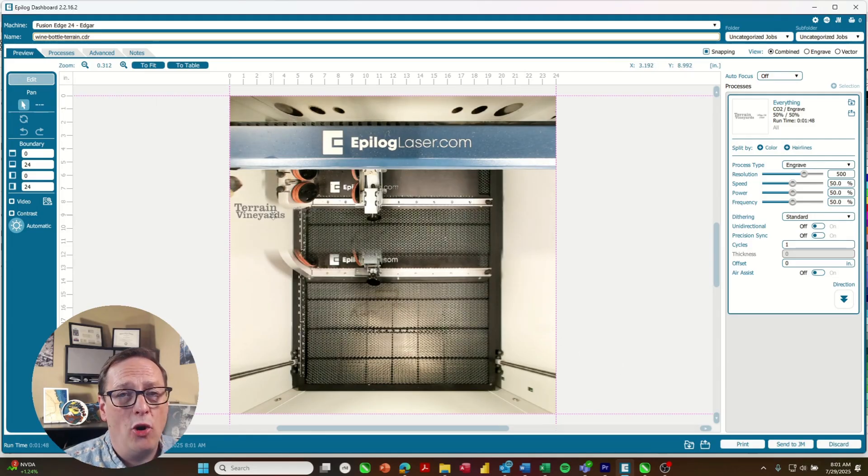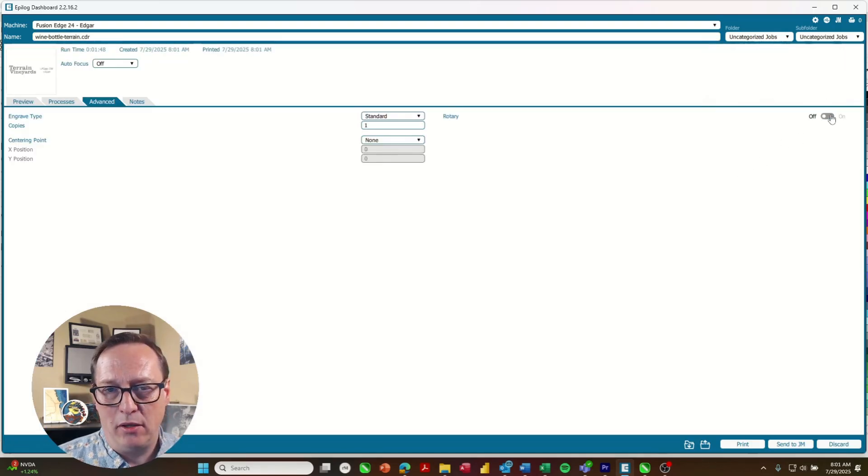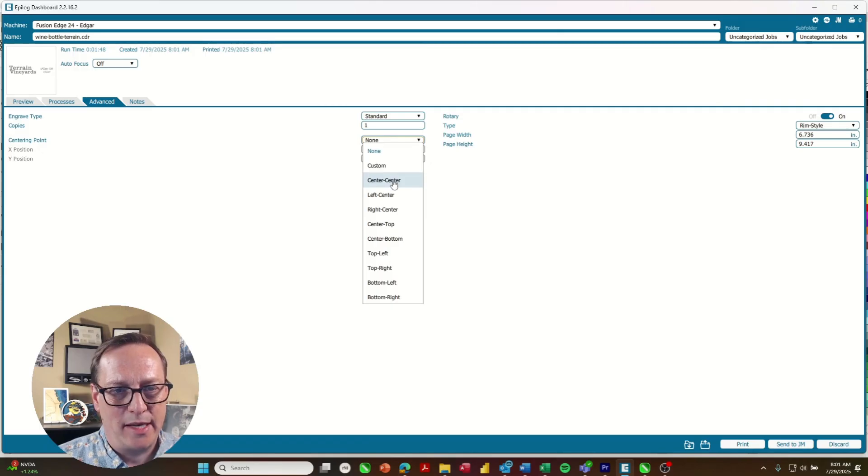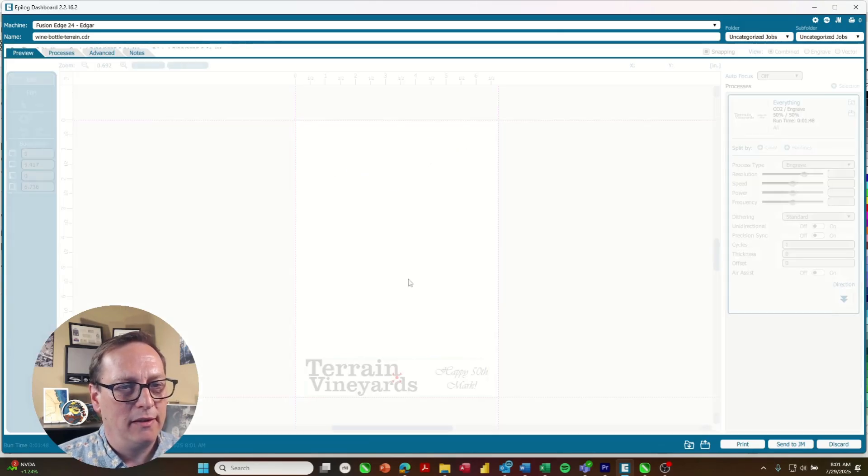Now when that opens in our laser dashboard I just go in the advanced tab, turn on my rotary attachment. Set the centering point to center center. So I can see that red dot where the center point is, once we set that, the machine knows where it's going to engrave around. I'll import my glass settings.